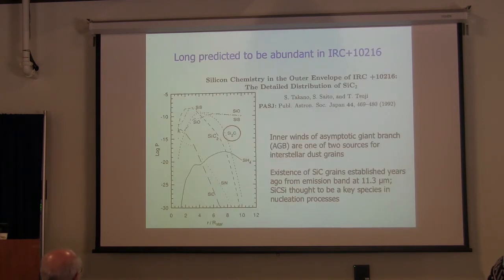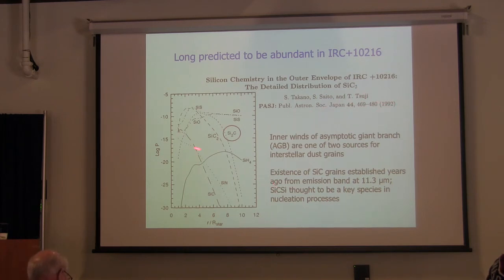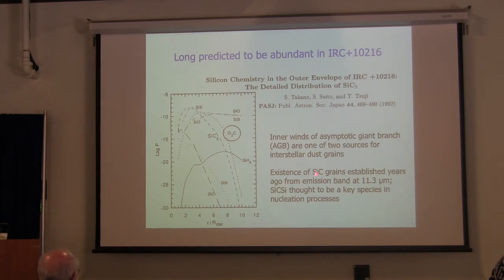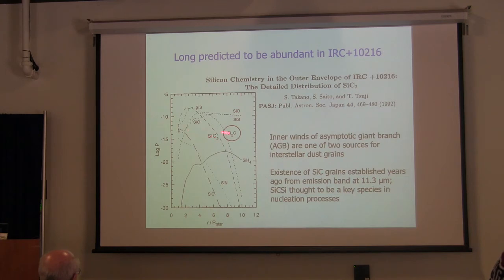People have long calculated SiCSi to be very abundant near the photosphere of carbon stars. This is from a 1992 model of silicon chemistry near the photosphere. AGB stars are one of the two major sources of interstellar dust grains, and silicon carbide is observed fairly close to the star itself. SiC2 is well-known in these sources, and by prediction SiCSi is one of the most abundant species near the photosphere. About half of all molecules observed in space have been observed in IRC+10216 — a carbon-rich star that is the central star of CW Leo, expounding a tremendous amount of gas and dust.